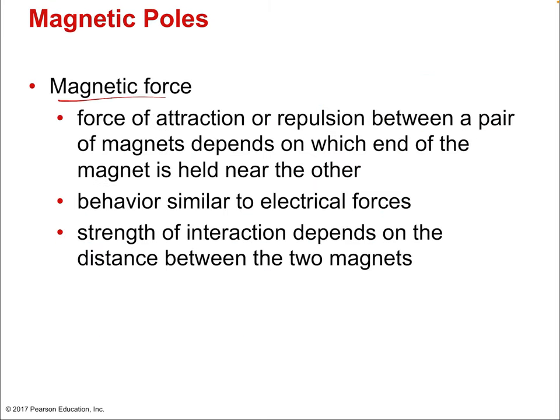Do magnetic fields and magnetic poles create forces? Absolutely. One magnet is attracted to another, but it depends on how you orient those magnets. Just like with electric charge, you can be attracted or repelled depending on which end is held near the other. Opposites attract. The strength of interaction depends on distance — it falls off with distance, inversely proportional to the distance, not the distance squared. There isn't a convenient formula like the Coulomb force, because magnetism is not inherent to any known particle.